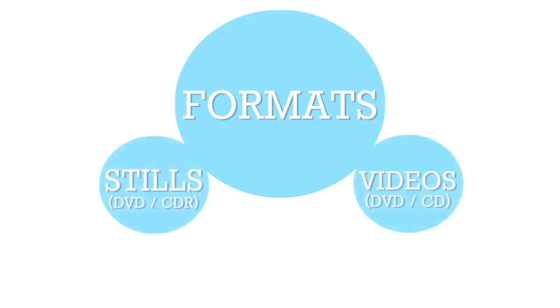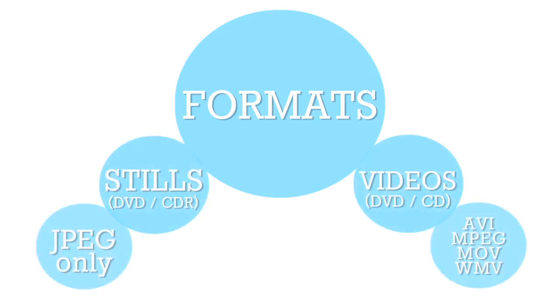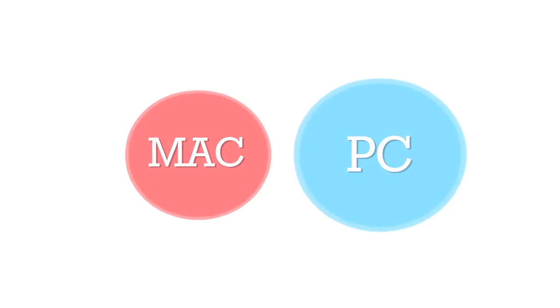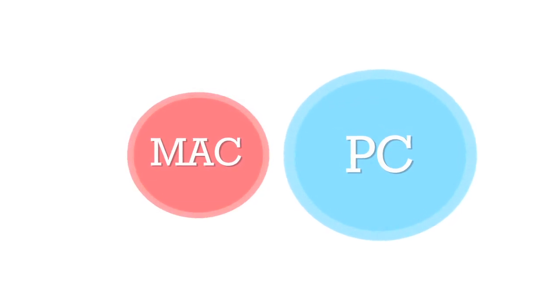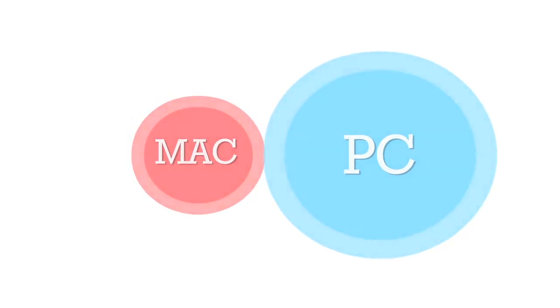Ensure that your images and other support materials are formatted to the current technical specifications detailed in the grant application form. Formats can change frequently, so double-check the guidelines. Please test all of your support materials thoroughly to make sure they are formatted correctly and run smoothly. The Ontario Arts Council works in a PC environment, so test your materials on a PC computer.